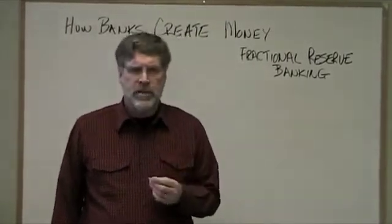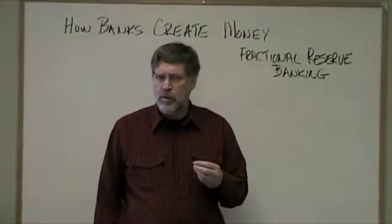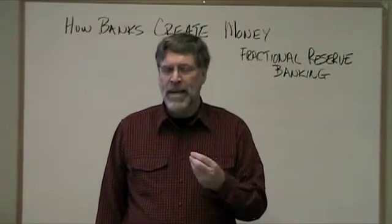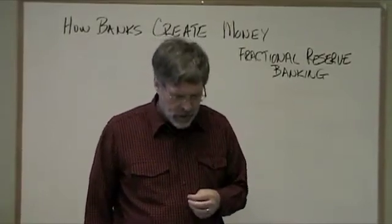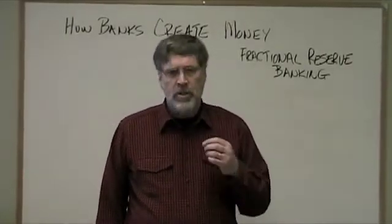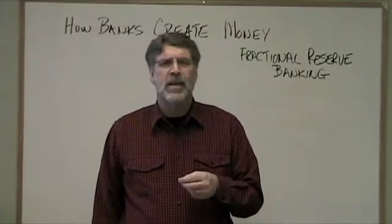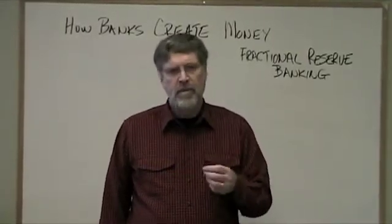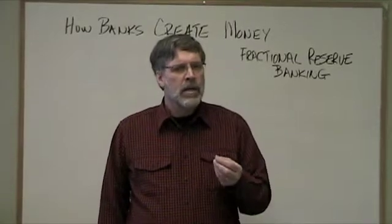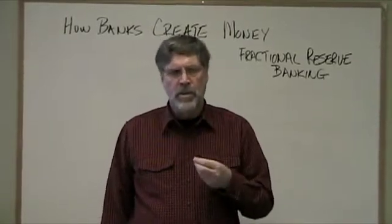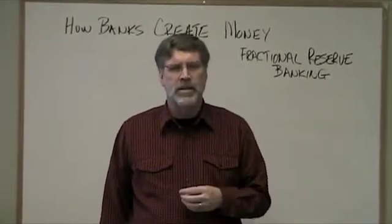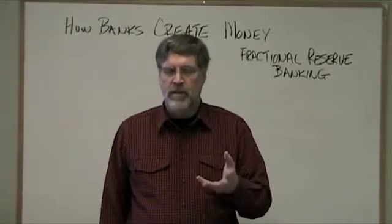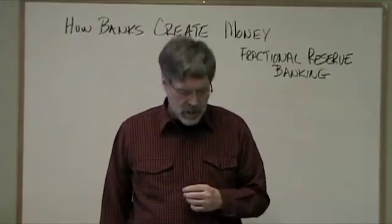We're going to look at three things during this clip. One is a quick review of how economists define money and how we count it — M1 and M2. We're also taking a look at how modern banking works: deposits and loans and so on. And from that we're going to see how the process of banks making loans actually creates money, multiplies money, which is then available for consumption and use in the economy.